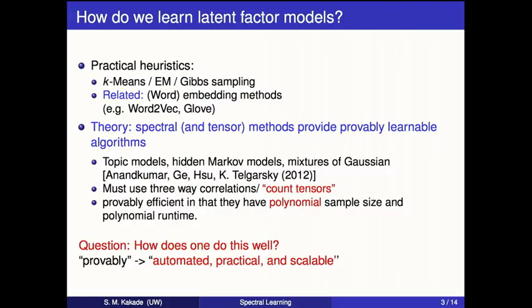By provable, we mean: given data, we'd like to discover topics or estimate an HMM. The short answer for a line of work by many people, including people in the audience, is that for a variety of these models we have computationally efficient algorithms to estimate the underlying structure. Given a table, we want to do the grouping efficiently without trying all possibilities.